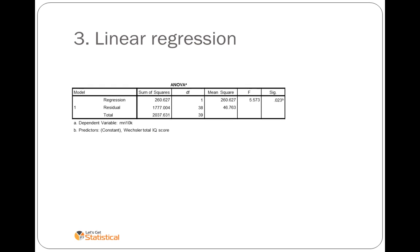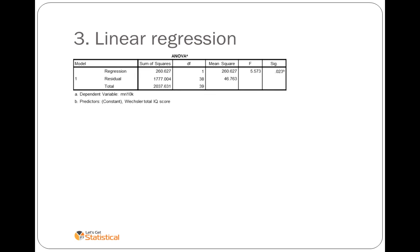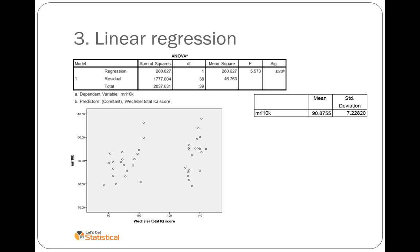Moving to the next table, the ANOVA table, if we just go through this bit by bit, you'll notice that we've got something called the sums of squares on this table. The total sums of squares is if we drew a straight line where the mean of 90.8755 was and we subtracted each score from that straight line and we squared that. That will give us our total sums of squares.